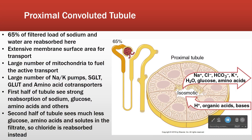First off, the proximal convoluted tubule. Here's our glomerulus capsule — this is the first part of the capsule generally speaking. This is the filtrate in here. We're going to have secretion of hydrogen ion, organic acid, and bases. We're going to have reabsorption of sodium, chloride, bicarb, potassium, glucose, and amino acids.